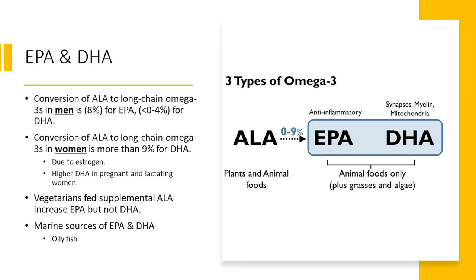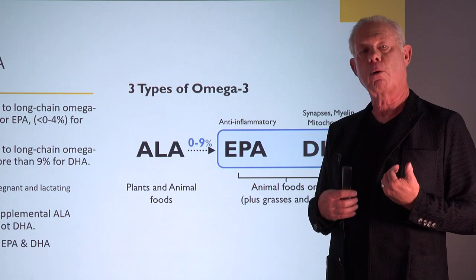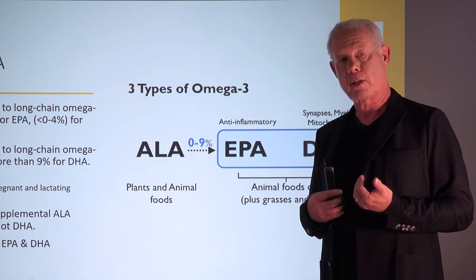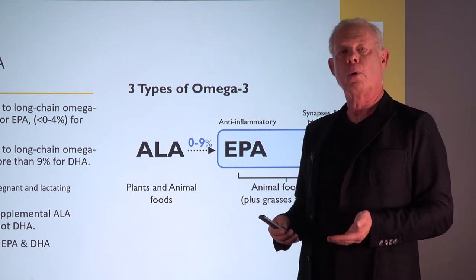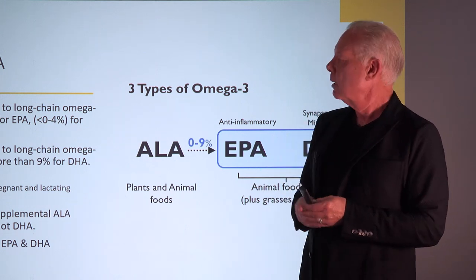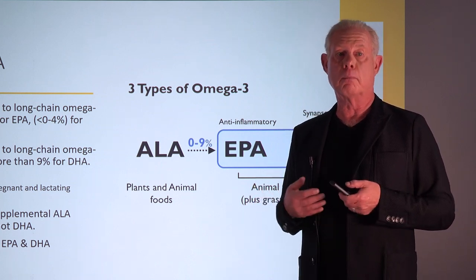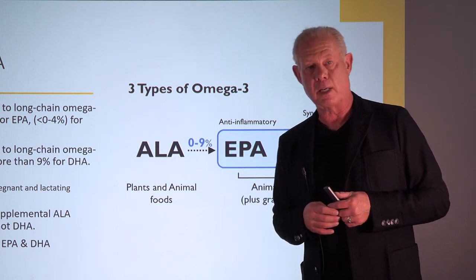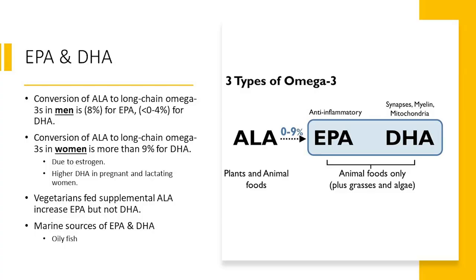The fetus growing inside the woman requires DHA in the brain — it's a very important part of brain and eye structure. So women with estrogen, as they get pregnant and estrogen levels go up, they make more DHA. In general, women convert more ALA into DHA and EPA than men. Vegetarians, whose diet is primarily ALA, have very little EPA and DHA in their body and have to supplement to get it.